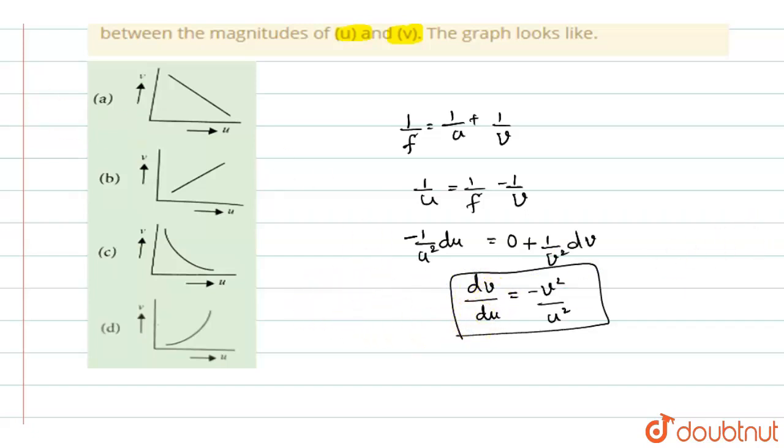So here dv by du, this denotes the slope value. You are plotting u versus v, so dv by du gives you the slope of the graph. Here you have a minus sign, which means that the slope is negative.